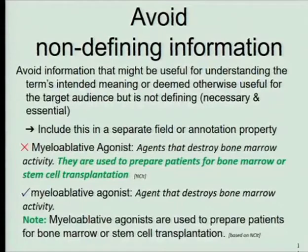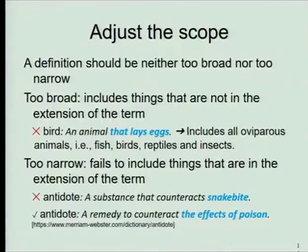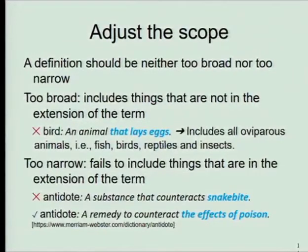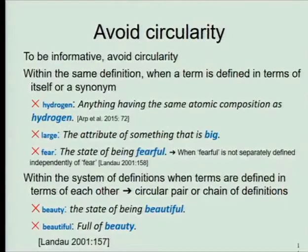Avoid non-defining information — we've seen that already with TB in the NCI thesaurus. 'A myeloablative agonist is used to prepare patients' — we don't need to know that for the definition; it's irrelevant extra data. All we need are the necessary and sufficient conditions. Definitions also shouldn't be too broad: if we define a bird as an animal that lays eggs, we miss fish, which also lay eggs. And they shouldn't be too narrow. Avoid circularity — 'beauty is the state of being beautiful' is circular.